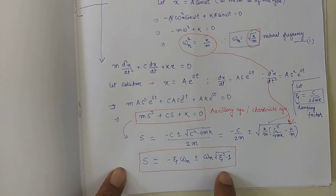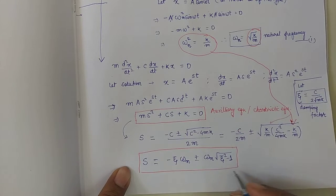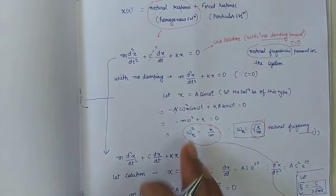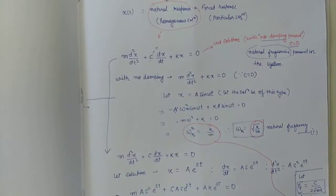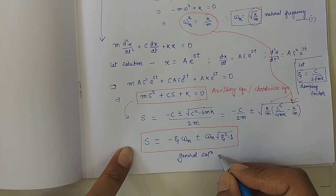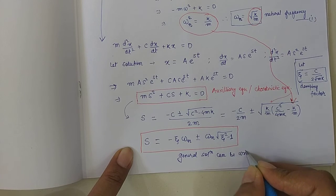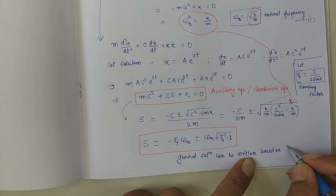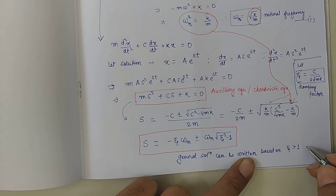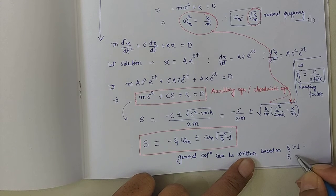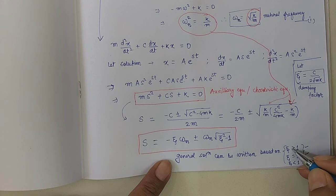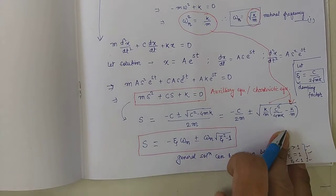Once we obtain s, the general solution for the natural response depends on the value of zeta. Three cases arise: zeta greater than 1 (overdamped), zeta equal to 1 (critically damped), and zeta less than 1 (underdamped). For each damping case the corresponding general solution can be written in a specific form.